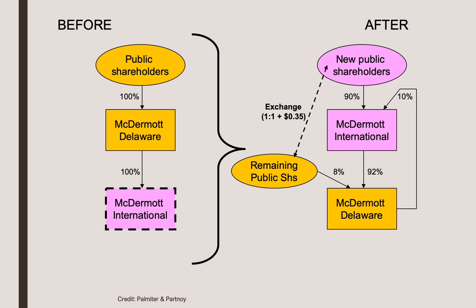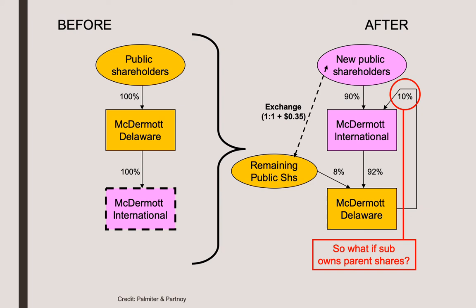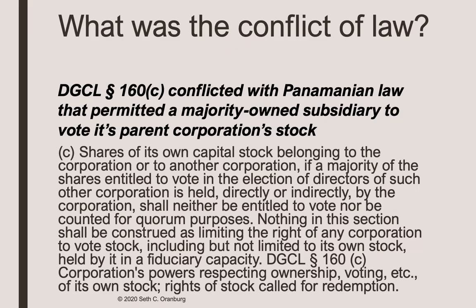In the jurisdiction of Panama, a subsidiary can vote the shares of its parent. This is not the case in Delaware. This is what we call a conflict of law. If the subsidiary owns parent shares in a U.S. jurisdiction such as Delaware, these shares can't vote. But in Panama, they can. And so this 10% makes a big difference because 10% is more than 8% — so guess who wins that contest?